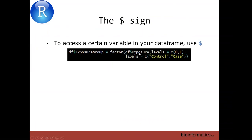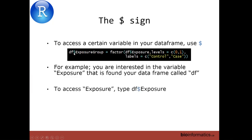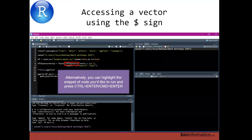I'm going to do a deep dive into the dollar sign, which we've seen quite a bit of. To access certain variables we use the dollar sign — we're accessing exposure. But you can also create a new variable using the dollar sign: DF$exposure_group creates a new variable called exposure_group. You can also highlight a snippet of your code and run just that part with Control+Enter.